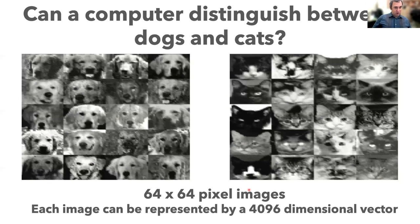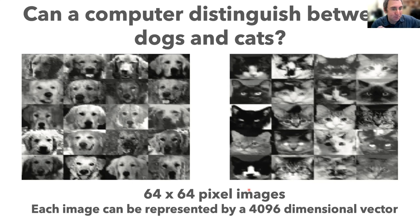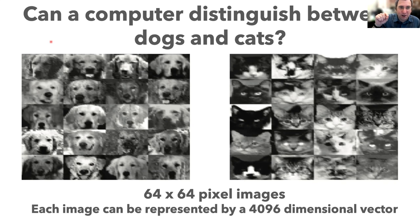Here's another fun one: can a computer distinguish between cats and dogs? We have pictures of 20 dogs and 20 cats. These are low-resolution 64 by 64 pixel images, but that actually means very rich data — 4,096 pixels, each with a grayscale value. So you can interpret each picture as a point in a 4,096-dimensional space where each value in the vector represents the grayscale of a particular pixel, going left to right across the image.